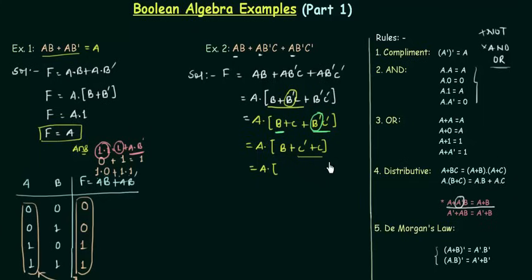Now it is really easy to calculate C' + C. From here you can see A' + A = 1. So C' + C is also equal to 1. So B + 1—and B + 1 is 1. So A·1, and A·1 equals A.